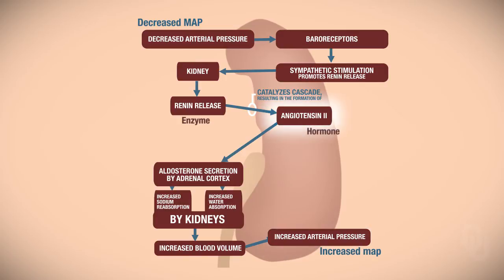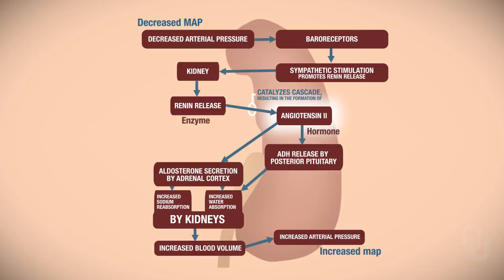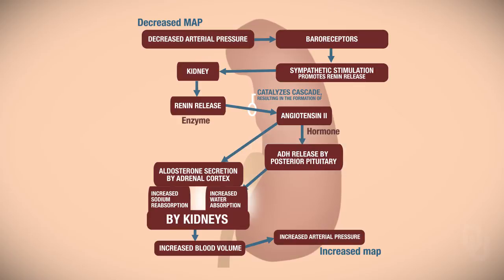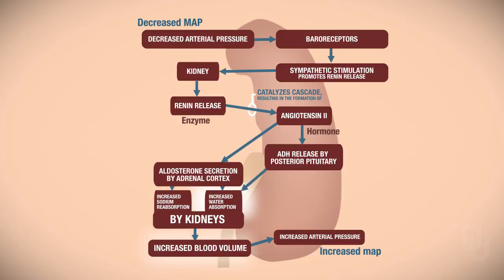Angiotensin II will also target the posterior pituitary. When it targets the posterior pituitary, that causes the release of ADH — antidiuretic hormone, also called vasopressin. Antidiuretic means it's not a diuretic — it does the opposite, so you urinate less. We urinate less because of increased water reabsorption. Therefore, if you increase water reabsorption, your blood volume goes up and your MAP will go up as well.